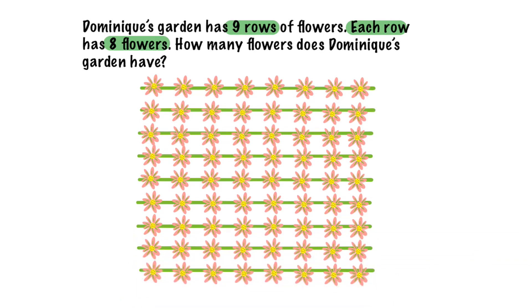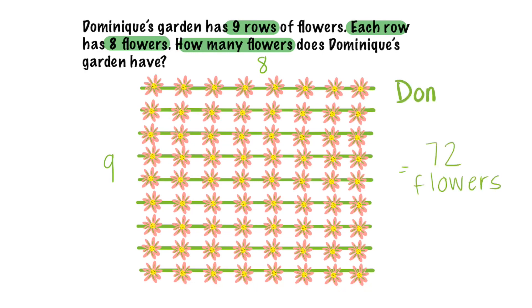How many flowers does Dominique's garden have? We know our keyword is 'how many.' We can either add or we can multiply. Let's go ahead and use an array. We can do nine times eight, and we know that would equal 72. Dominique's garden has 72 flowers. We know our keywords.